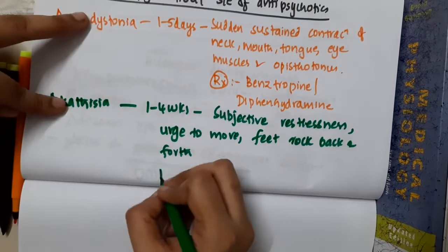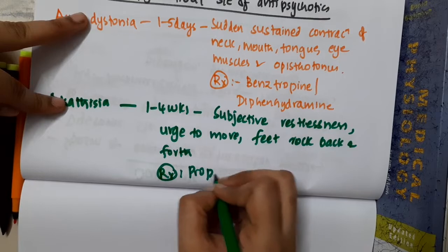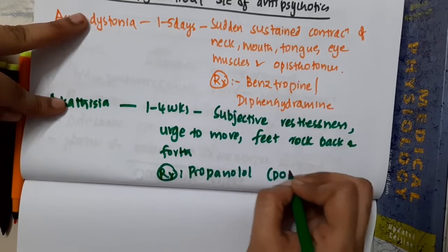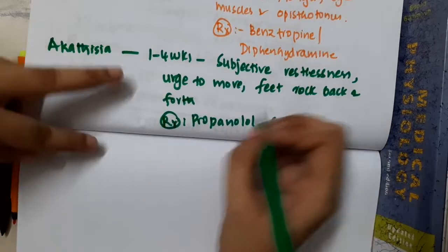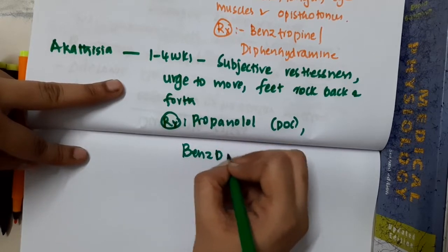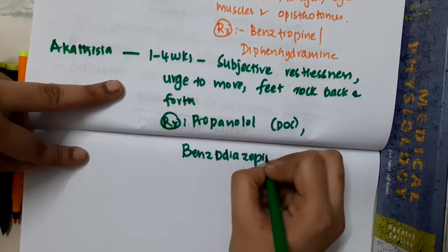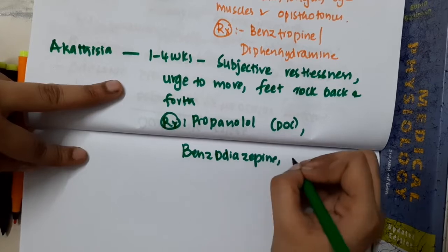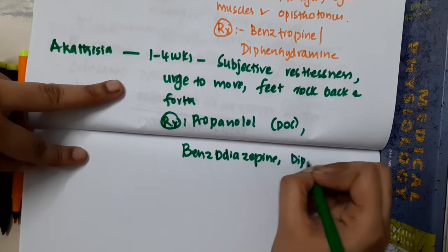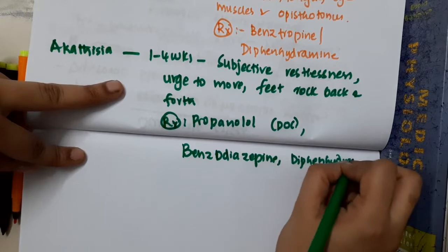The treatment of akathisia: propranolol is the drug of choice, but benzodiazepines and diphenhydramine can also be given.